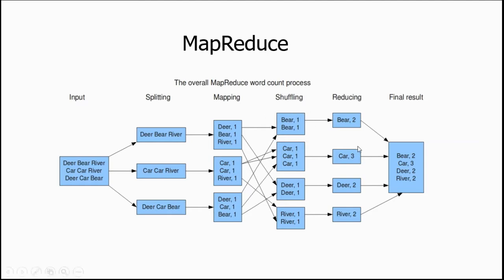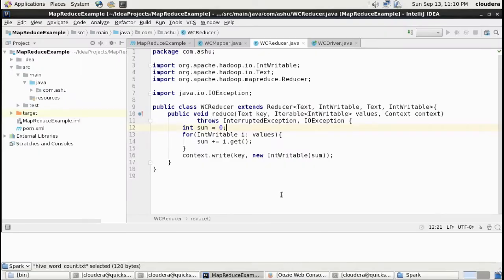Finally, when shuffling is finished, the reduce phase combines the output of map. Since 'bear one' and 'bear one' are together, we aggregate: bear two, car three, dear two, river two. This generates four parts. Finally, we generate the result in a file which is sorted by key — the key is the word and value is the frequency. Bear is two, car is three, dear is two, river is two. The huge file was split into parts, computation performed in parallel, and aggregated at the reduce phase. This is the core of MapReduce.